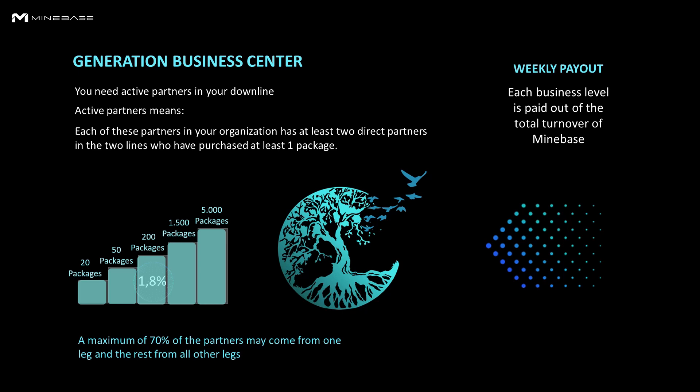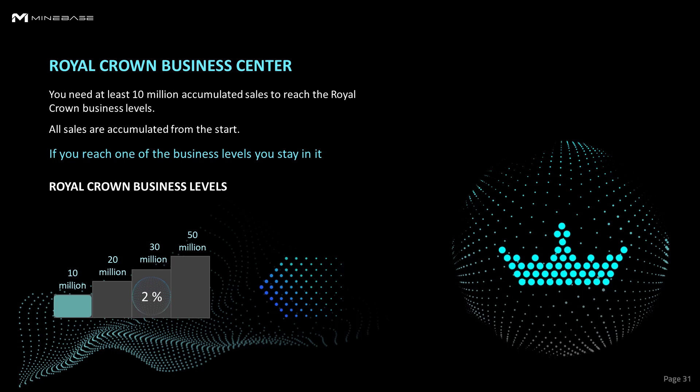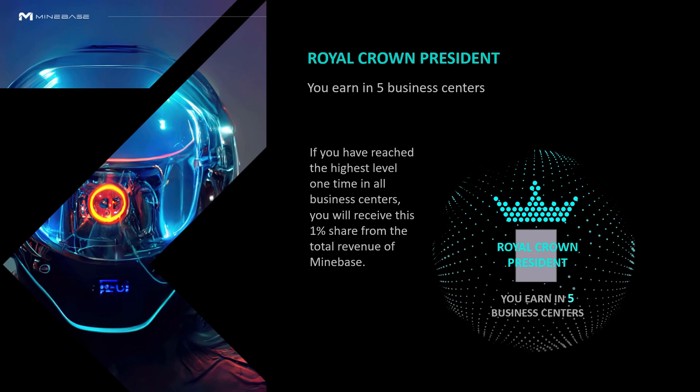For the future, there is the Royal Crown level, which requires you to reach 10 million in turnover. You stay in the business level until you reach the next one, and in the highest level you stay forever. The highest and last position is the Royal Crown President with 1%.